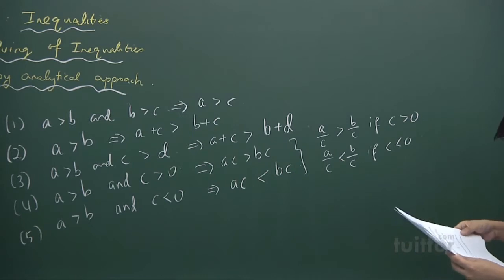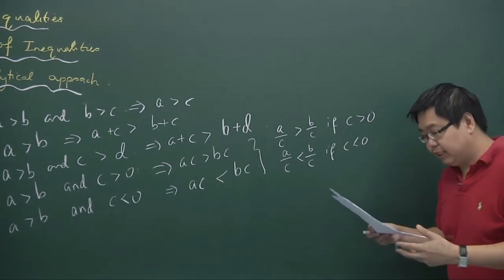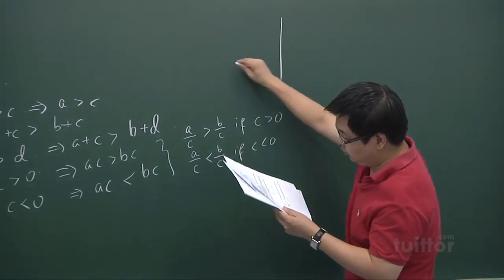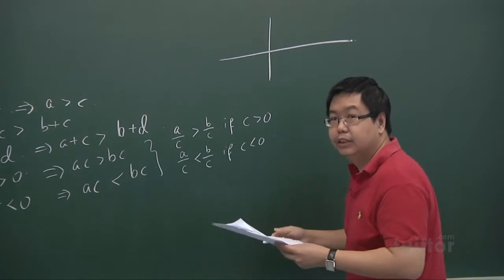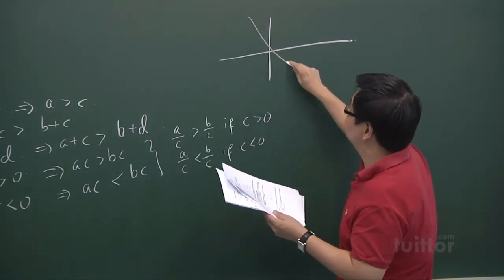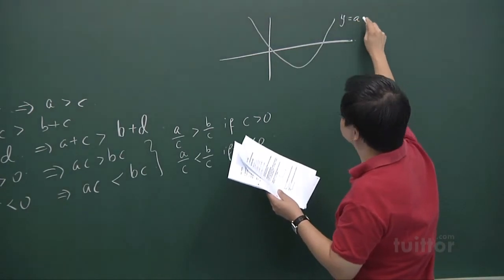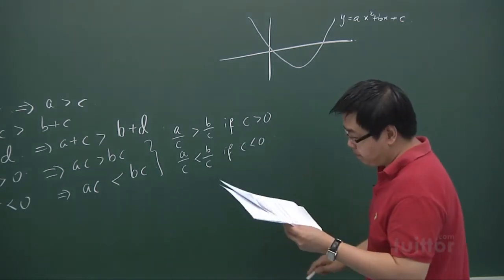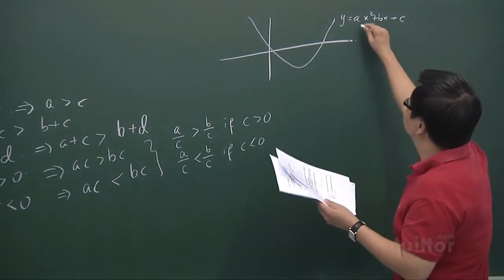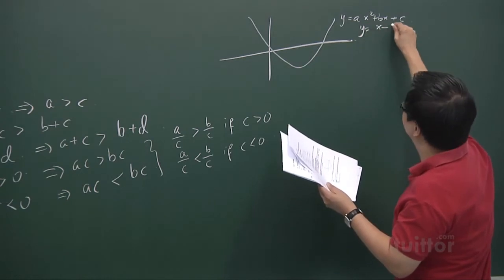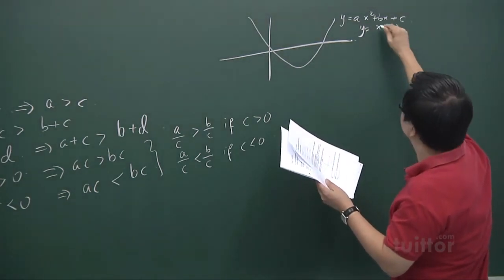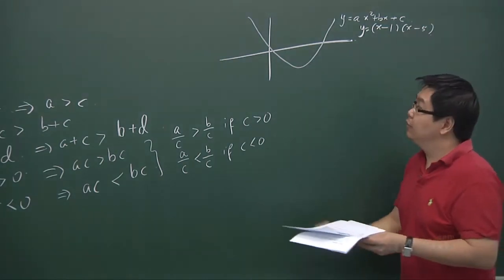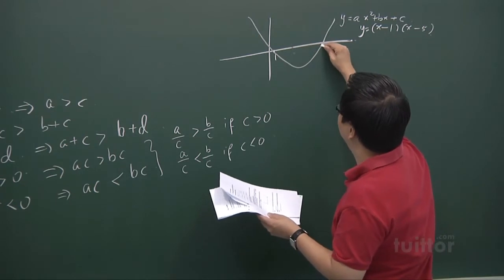Now we are ready to solve a quadratic inequality. To solve a quadratic inequality using the analytical approach, consider a quadratic curve. For a simple example, take (x minus 1)(x minus 5). This quadratic curve cuts the x-axis at two points: 1 and 5.